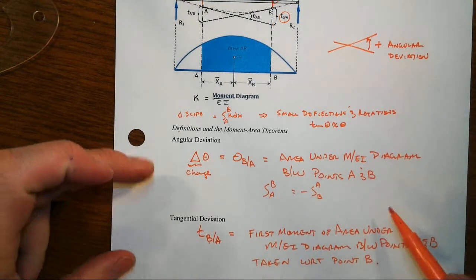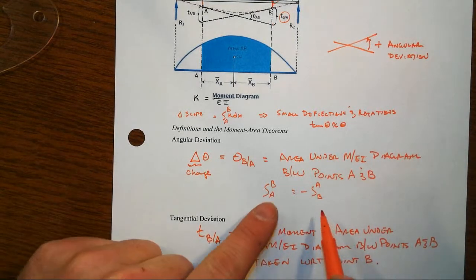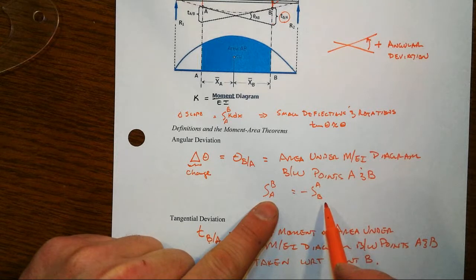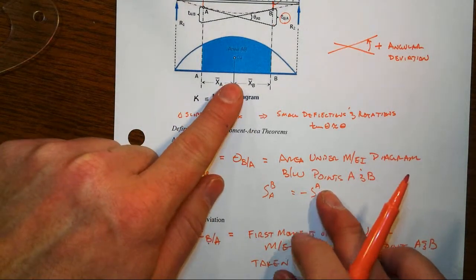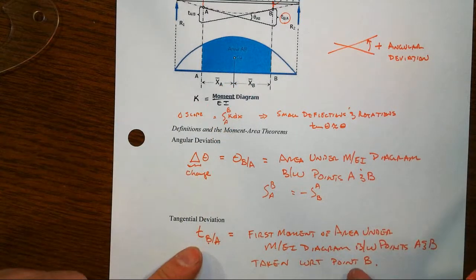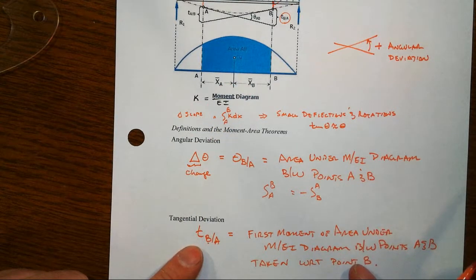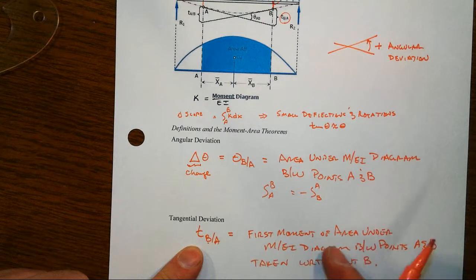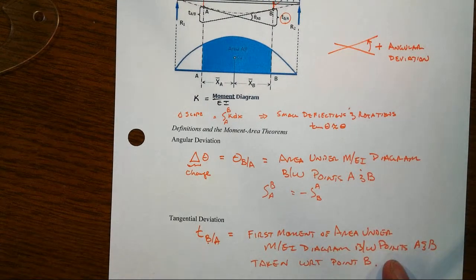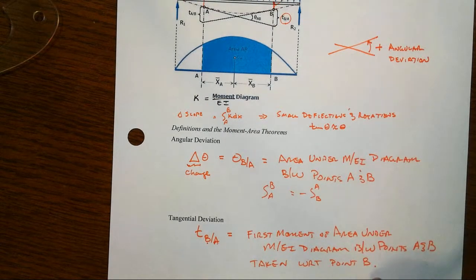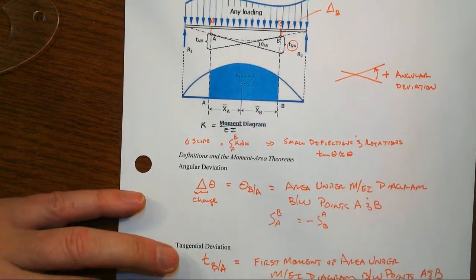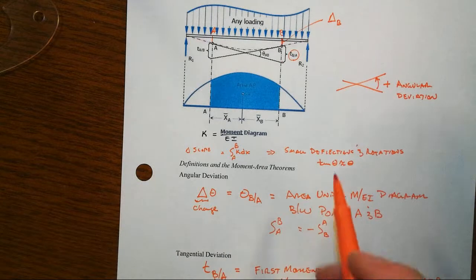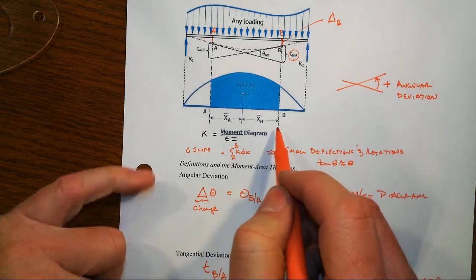Now none of this is a derivation of it. You can kind of see it directly for the change in the angle, and that's just an integral so therefore area under the curve. But it may not be quite so apparent that this next one is the first moment of area under the M over EI diagram between those two points taken with respect to point B. That's something that you need to go take a look at a different video to see where that derivation comes from. Right now we're just trying to define the terms.